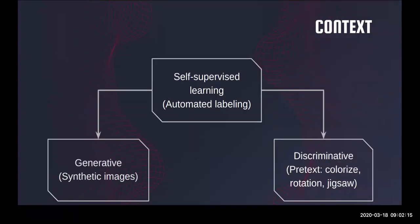The main problem with supervised learning is that getting labeled data is very costly and hard. The process of manual labeling data is very tedious, costly and difficult. At the same time, collecting unlabeled data is very easy. So the problem that self-supervised learning is trying to solve is to find a way to automate this labeling process and take advantage of all the available unlabeled data.